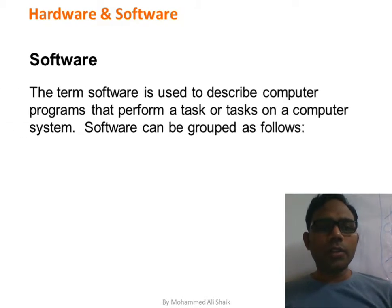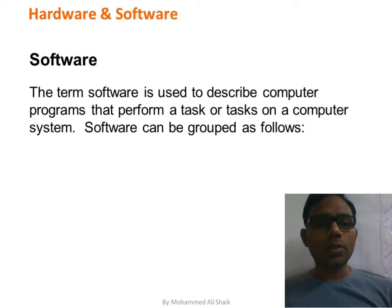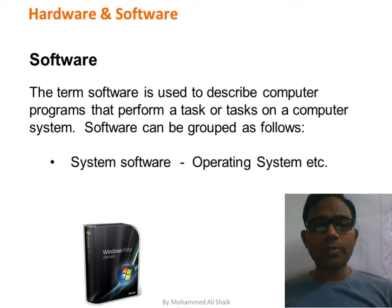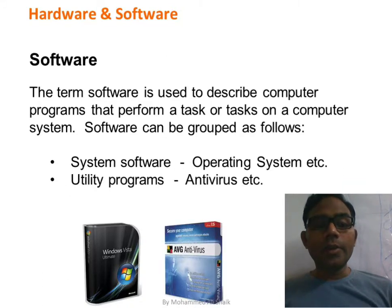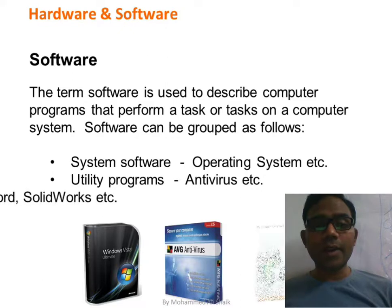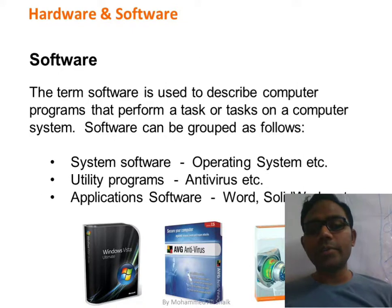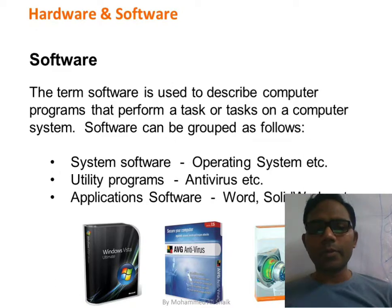Software refers to computer programs that perform tasks on a computer system. Software can be grouped as system software (operating systems), utility programs (like antivirus, check disk, format, defragment), and application software used daily such as Microsoft Word, business applications, SOLIDWORKS, or Photoshop.